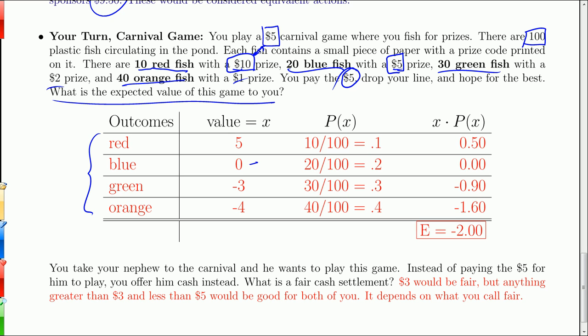If you get a green fish, what's the prize on a green fish? It's a $2 prize. But you spent $5, so it's actually a negative $3 to you. The orange fish have $1 prizes. But again, you spent $5, so that's a negative $4. Don't forget these negatives. They're very important. They indicate winning or losing.